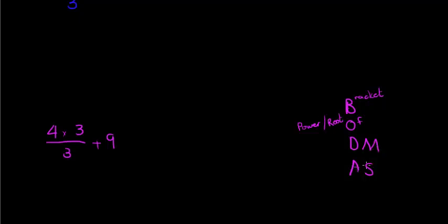I'll start with my brackets, then power of or root of, then division and multiplication. Do I have any brackets here? I actually do because this line tells me that everything in the numerator is being divided by 3. So there's only one term there, it's really not that important here, but let's put it in brackets for the sake of illustration. So we must do whatever is in brackets first, which means our first step would be 4 times 3, which is 12, divided by 3 plus 9.